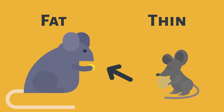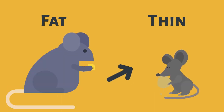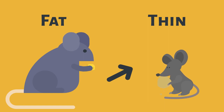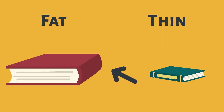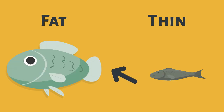This mouse is fat. This mouse is thin. The red book is thin. And the blue book is thin. This fish is fat. And this fish is thin.